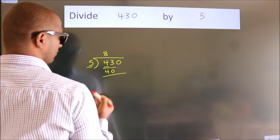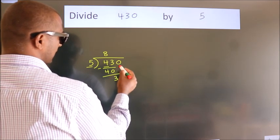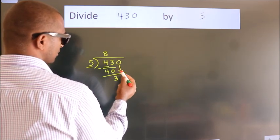Now, we should subtract. We get 3. After this, bring down the beside number. So, 0 down.